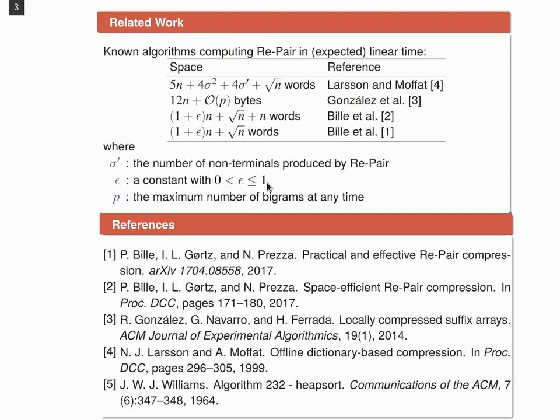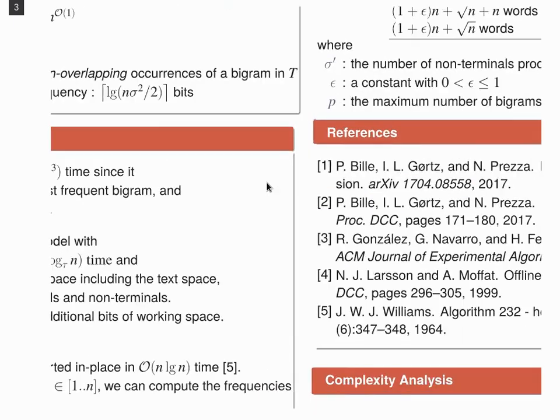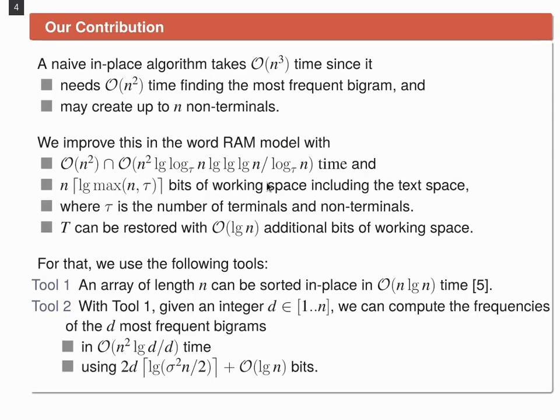But here we focus on solutions that need even less space and for that first think about an algorithm that computes REPAIR in place. Naively, how much time do we need? First, we need to find the most frequent bigram and this takes squared time. And because there are at most n non-terminals, this gives us n cubed time.